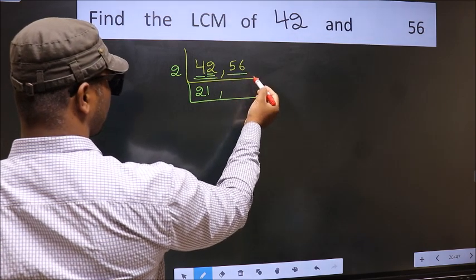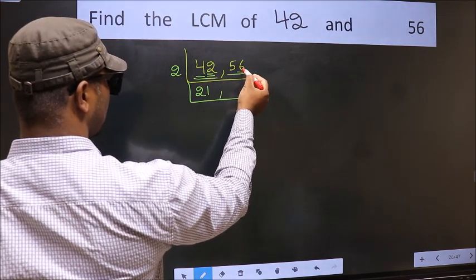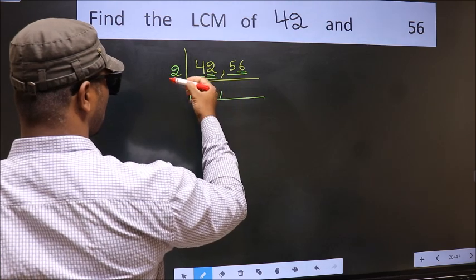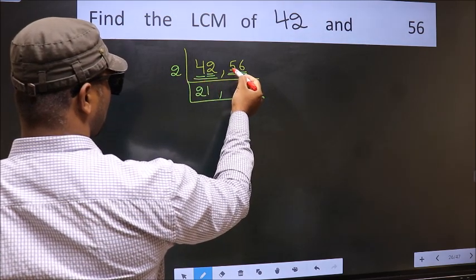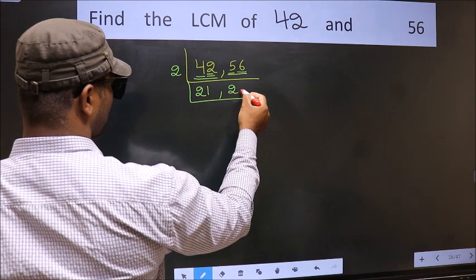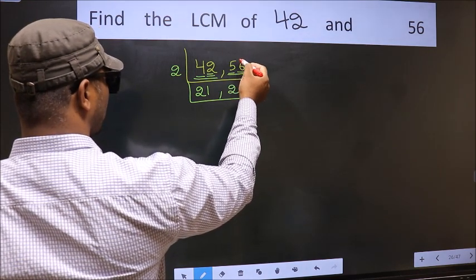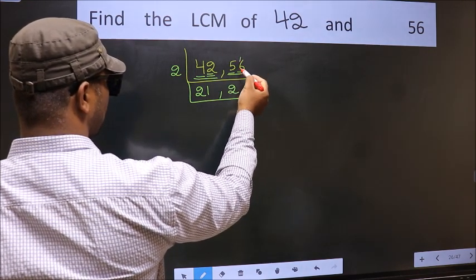Now the other number, 56. Last digit 6 is even, so this is divisible by 2. First number 5 - a number close to 5 in the 2 table is 2 times 2 equals 4. 5 minus 4 is 1, carry forward. 16 - when do we get 16 in the 2 table? 2 times 8 is 16.